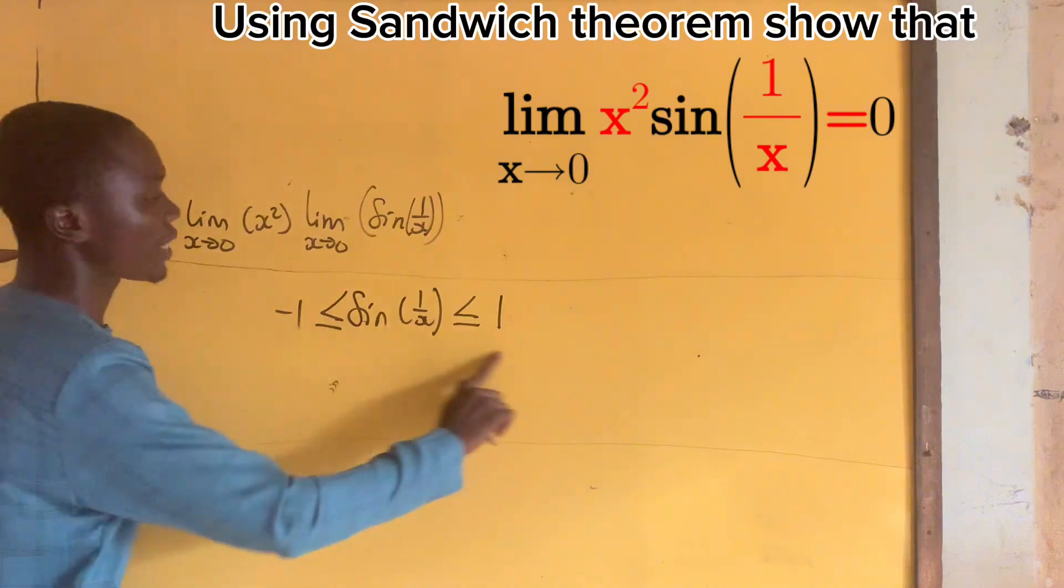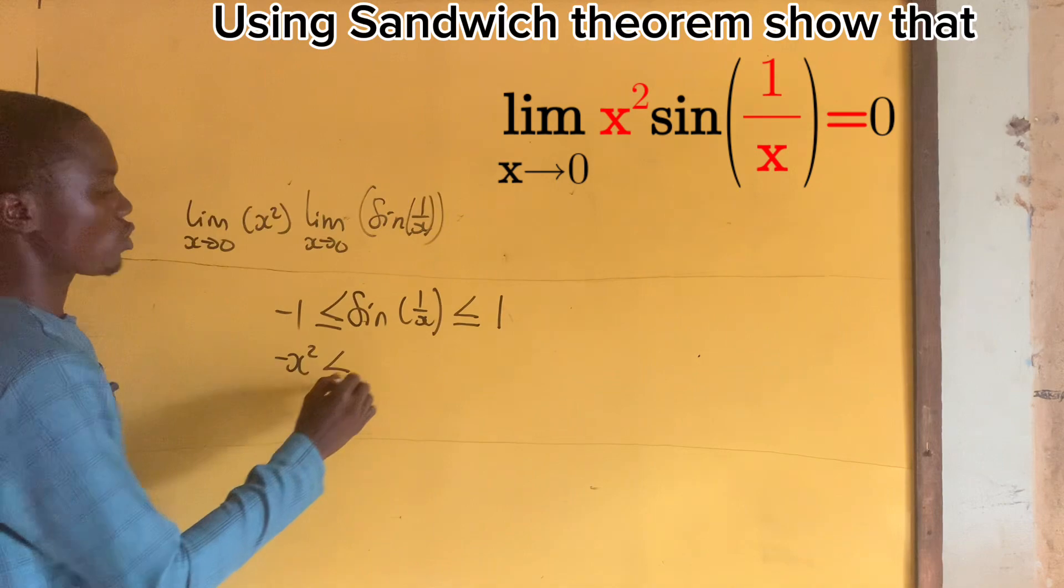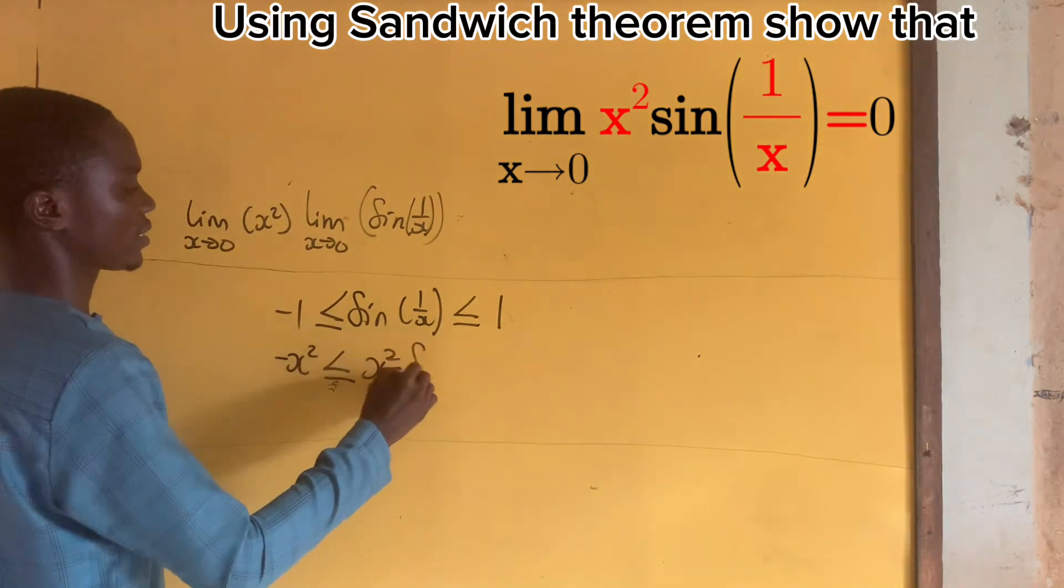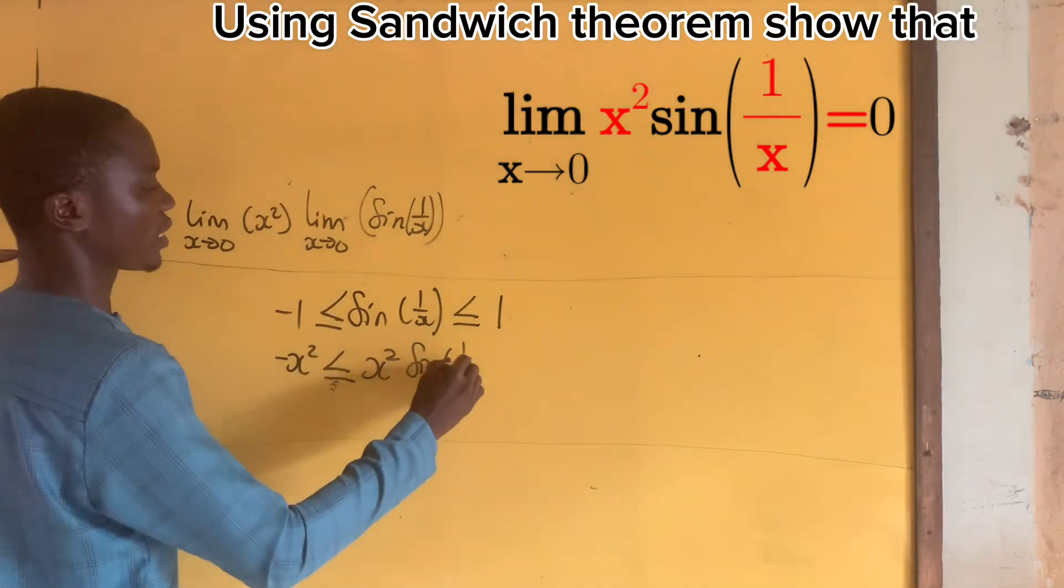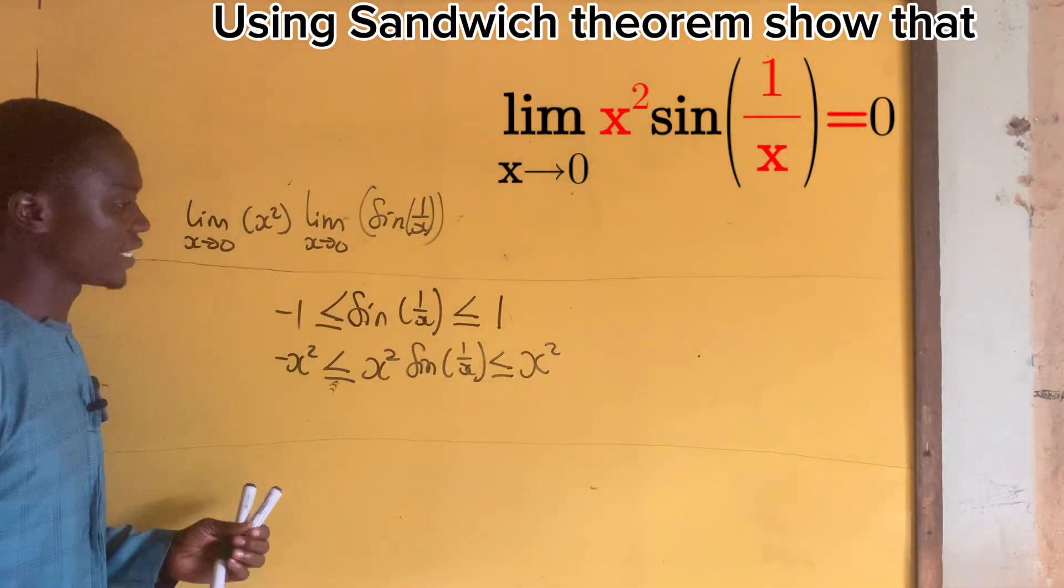So let us multiply by x². Now we have -x² ≤ x²sin(1/x) ≤ x². That is very nice.